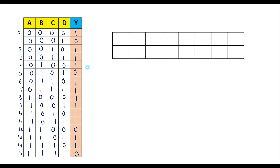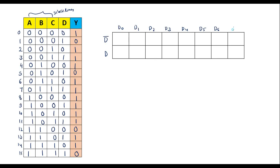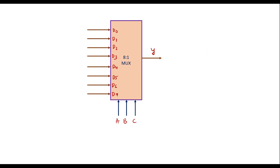We are supposed to use A, B, C as select lines and D as a data line, since this is a 4-variable function. We draw a table with 16 cells. One row is used with respect to the variable D̄ (D bar), and another row for the variable D. So 0 indicates the complement of D, that is D bar, and 1 indicates the direct variable D. The input lines are labeled D0 through D7.